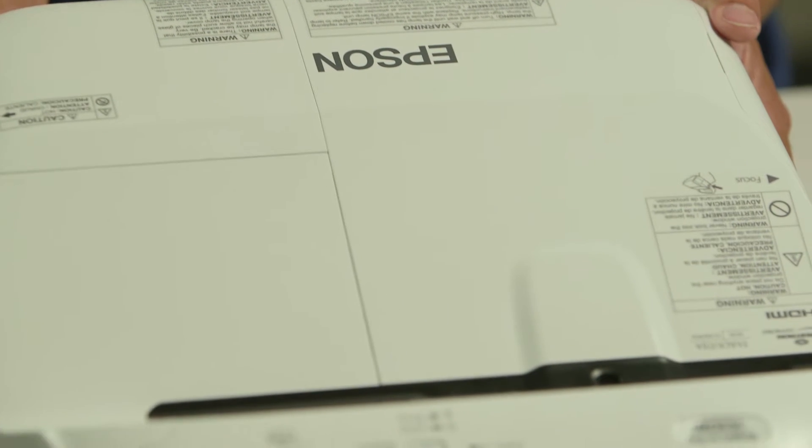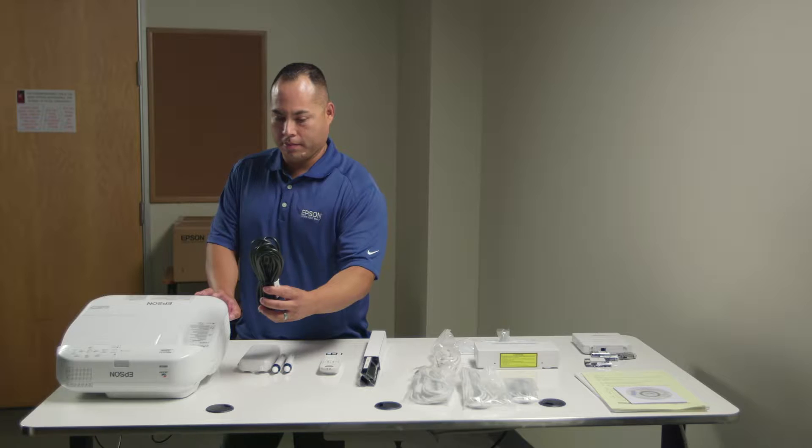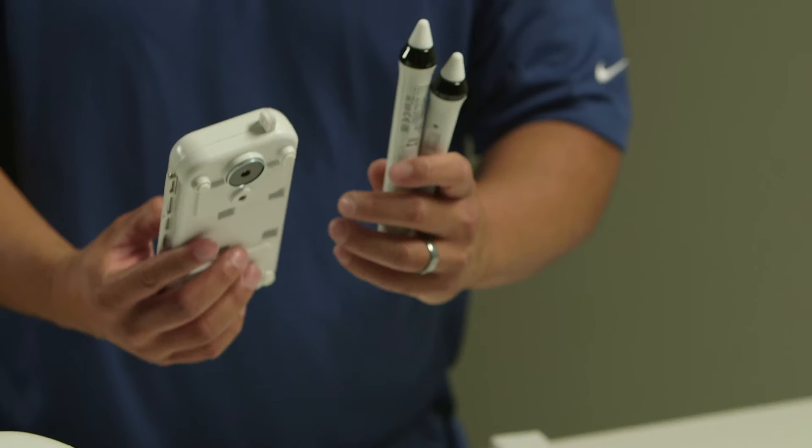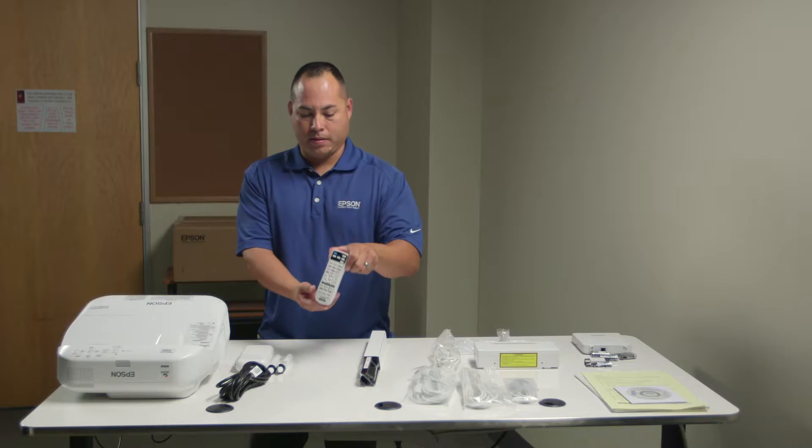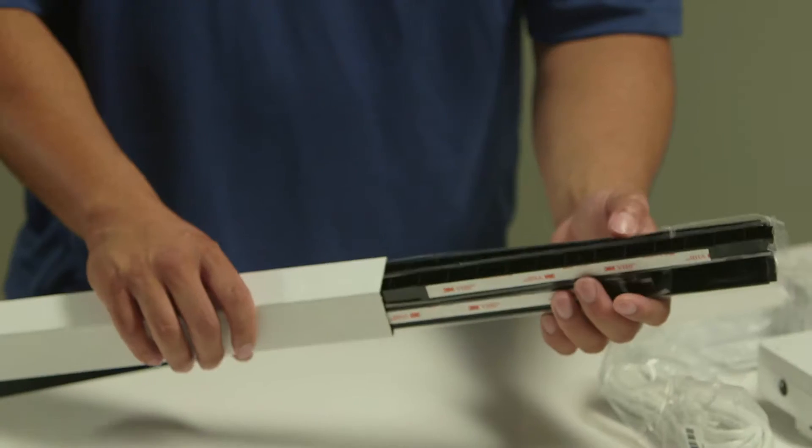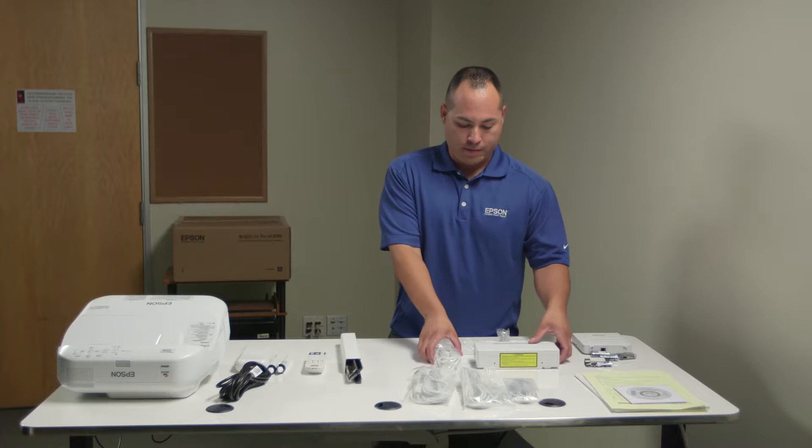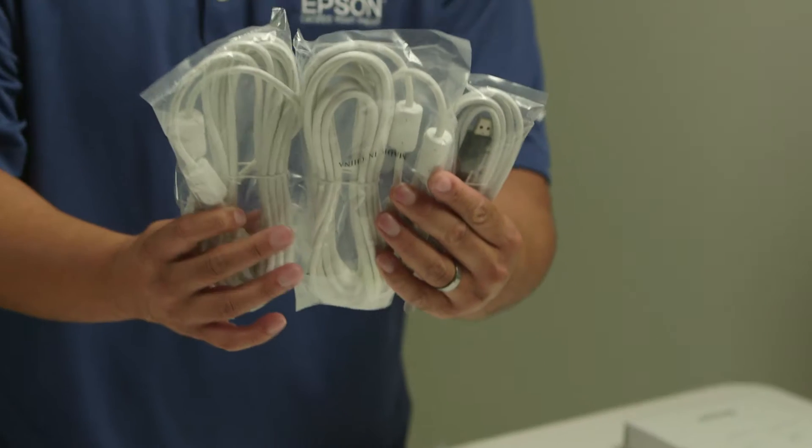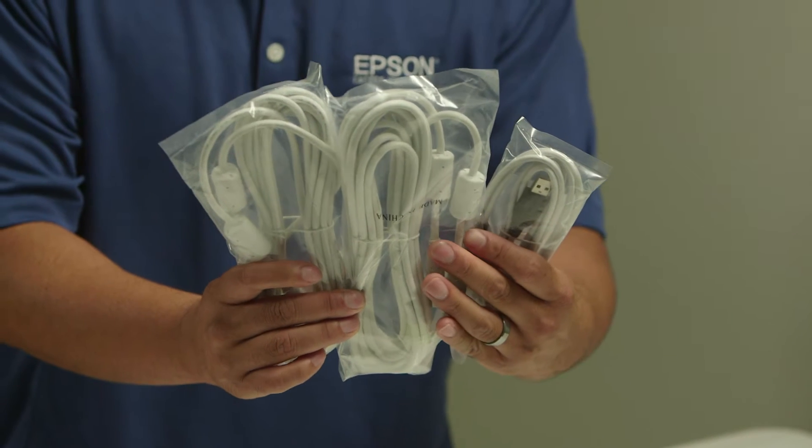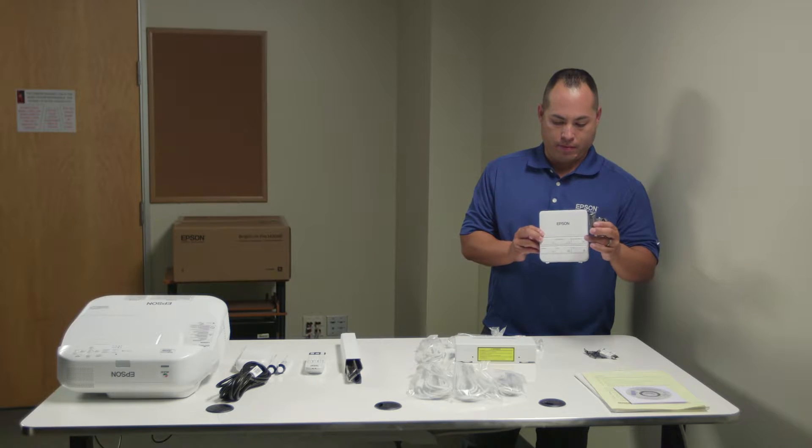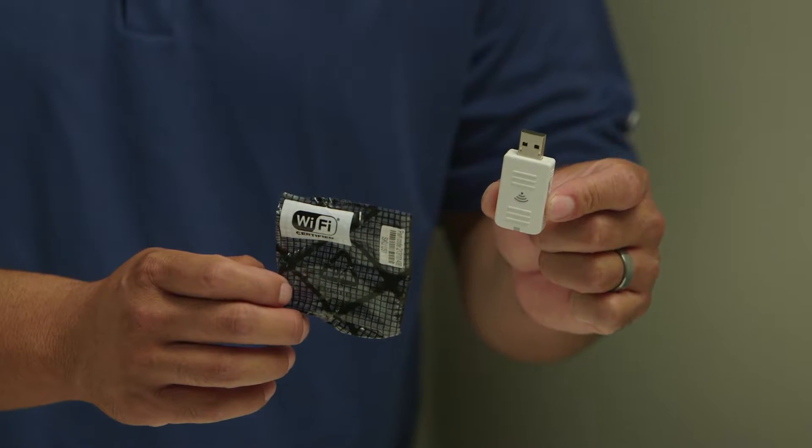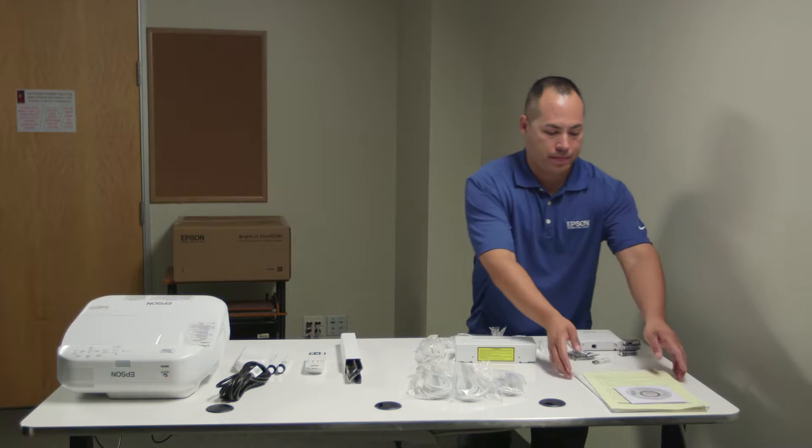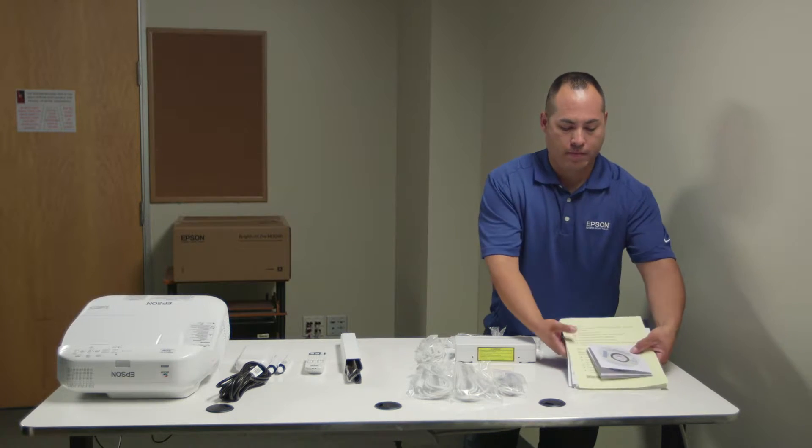Inside the box, you will find the projector, the power cable, two interactive pins with case, the remote control, IR reflectors, the finger touch module with its cables and installation bracket, USB cables, control panel, Wi-Fi module, and a pack of printed materials and software for use with the projector.